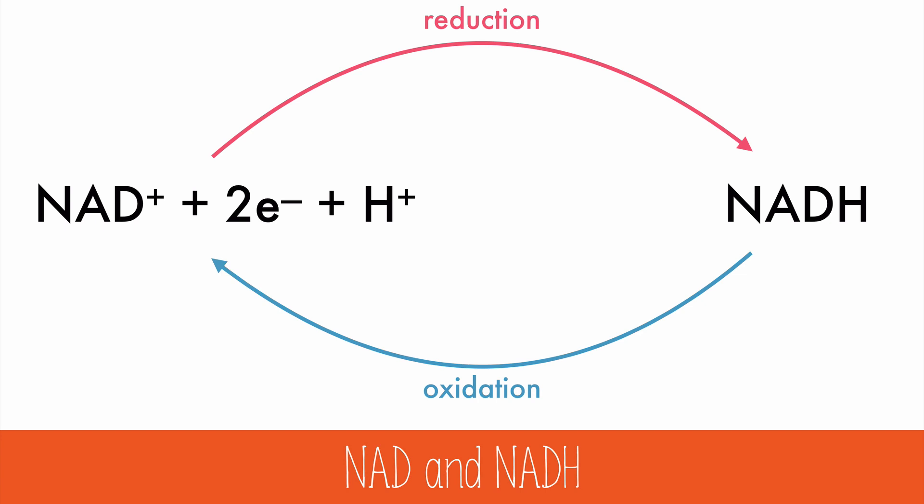Because the reaction involves carrying and releasing a proton and electrons, molecules like NADH are often called hydrogen carriers, or even taxicab molecules. Their job is to shuttle the electrons and proton from one reaction to another.